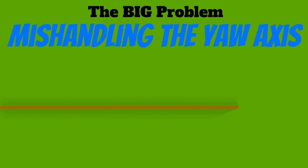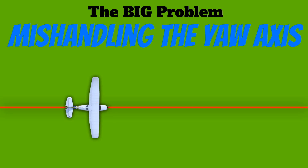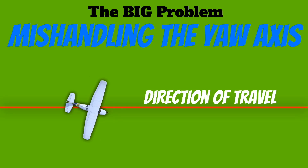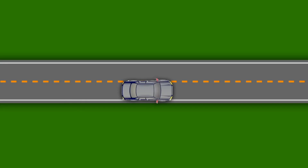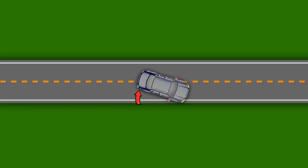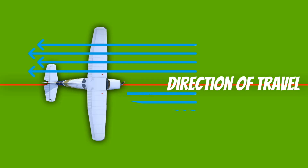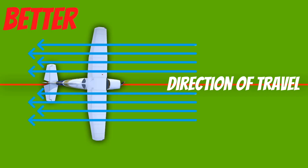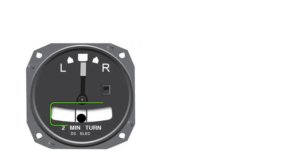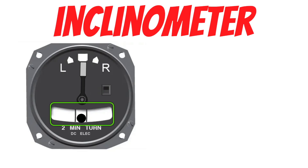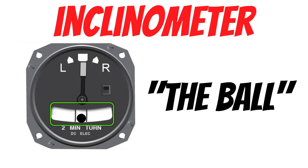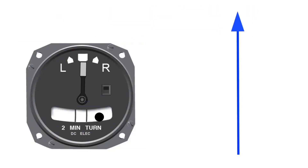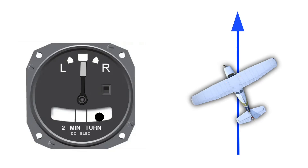The big thing that's going to make the recovery difficult is if you're mishandling that yaw axis — this simply means that the tail of the aircraft is not aligned with the airplane's direction of travel. Think about what happens when you're driving a car and the back end skids out; the car can be difficult to control. Airplanes are the same way — we need the air to flow over all the control surfaces evenly on both sides. That's why you have an inclinometer in your airplane, which almost all pilots call 'the ball.' If the ball isn't centered when you're flying around, the tail of your airplane is not aligned with the airplane's direction of travel.